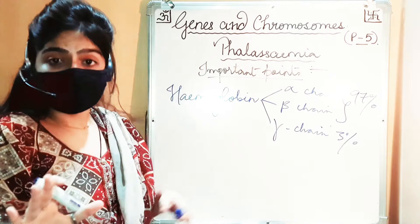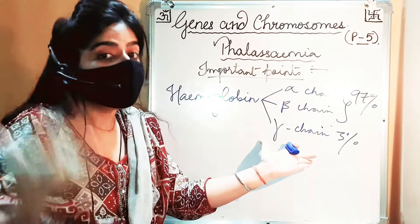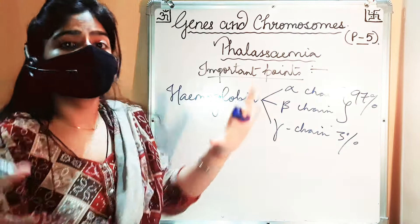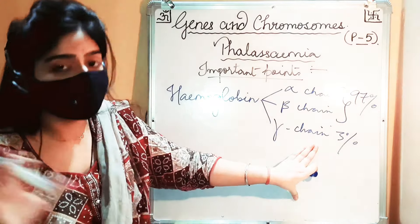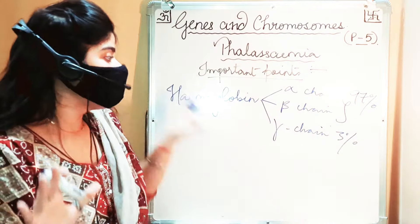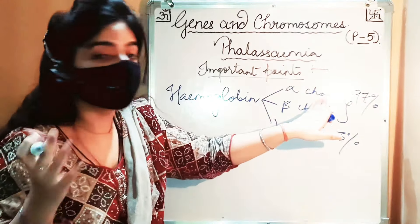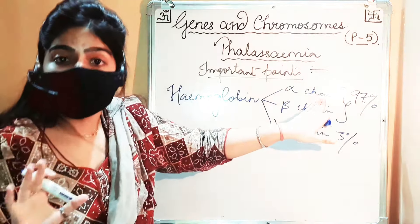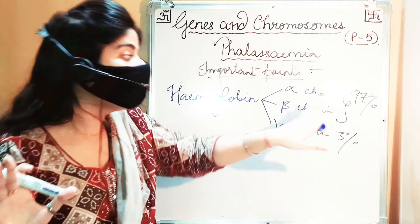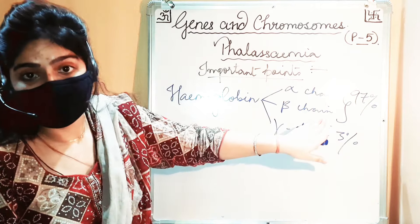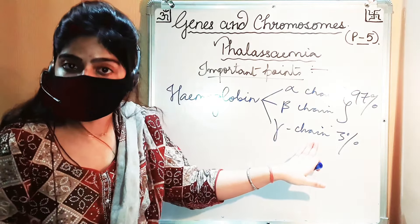If a person is affected in the gamma chain — that is, the gamma chain is lacking in hemoglobin — there are no symptoms of this disease because gamma only contributes 3%. However, if the alpha chain is lacking in hemoglobin, that will cause alpha thalassemia, and this will cause a problem with hemoglobin.